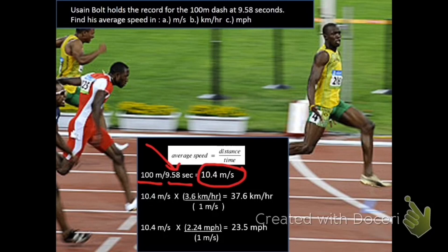And then for our conversions, we're always going to keep the same number of significant digits we started with. So here's my 10.4 meters per second. Again, I'm going to do my conversion factor of 3.6 kilometers per hour is equal to 1 meter per second. Meters per second cancels out, and I get my answer in kilometers per hour.